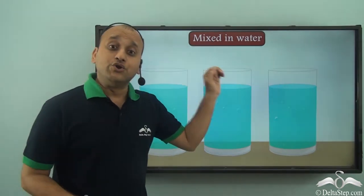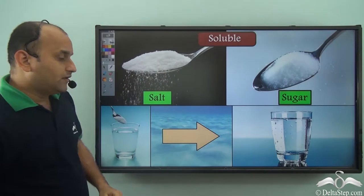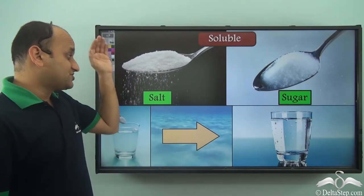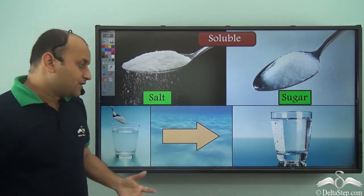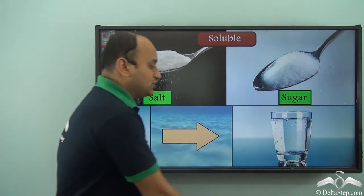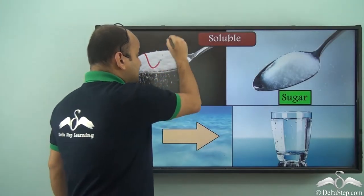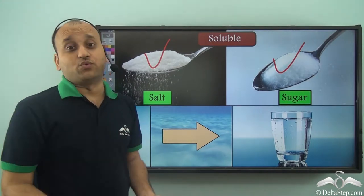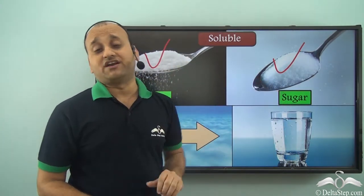The substances added in the first case got completely mixed with water, and that's why they are not visible. What are these substances? Substances such as salt and sugar completely mix with water. When you put salt or sugar in water, after some time you will get a clear glass of water. Both of these substances can get completely mixed with water, and as a result, they become invisible.